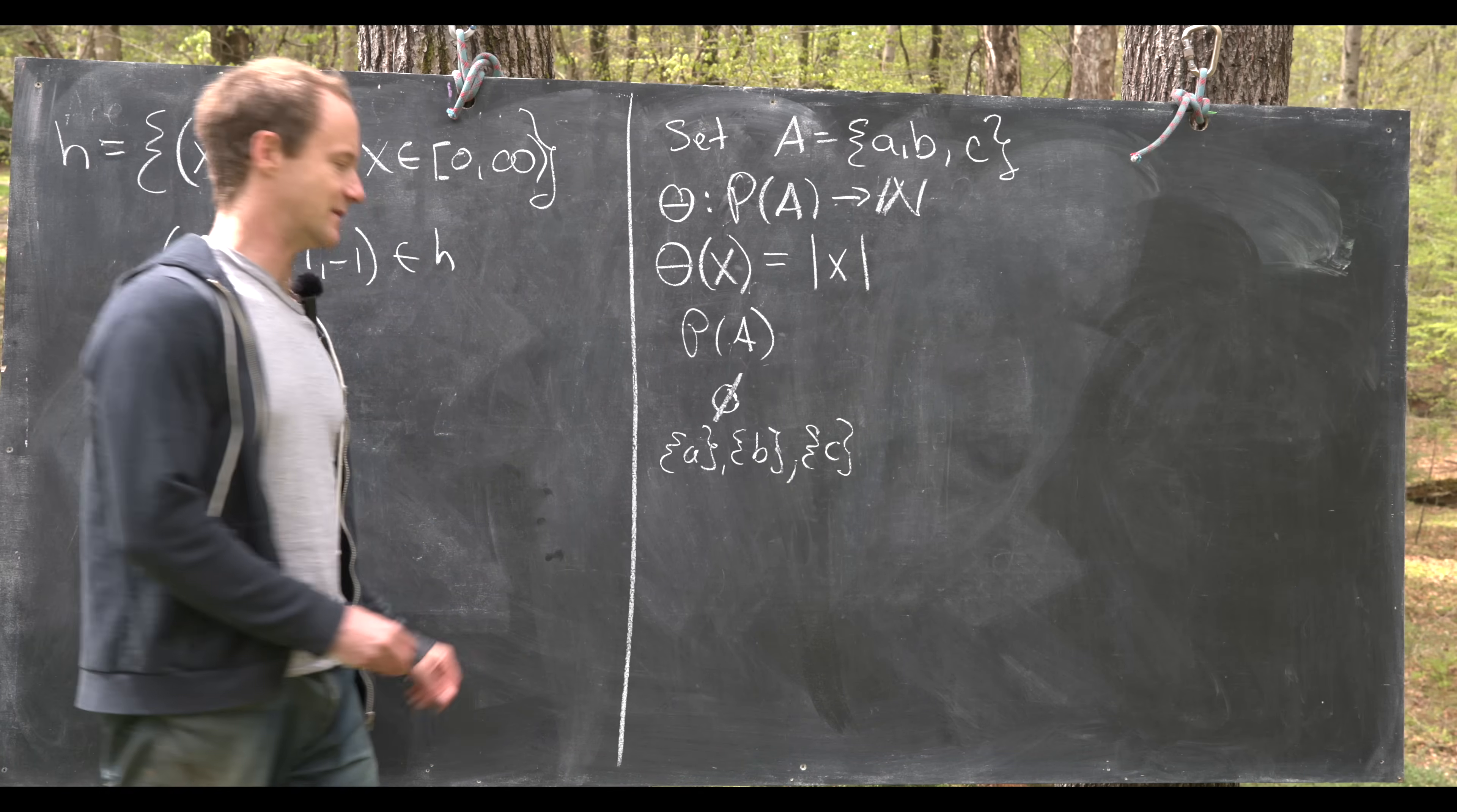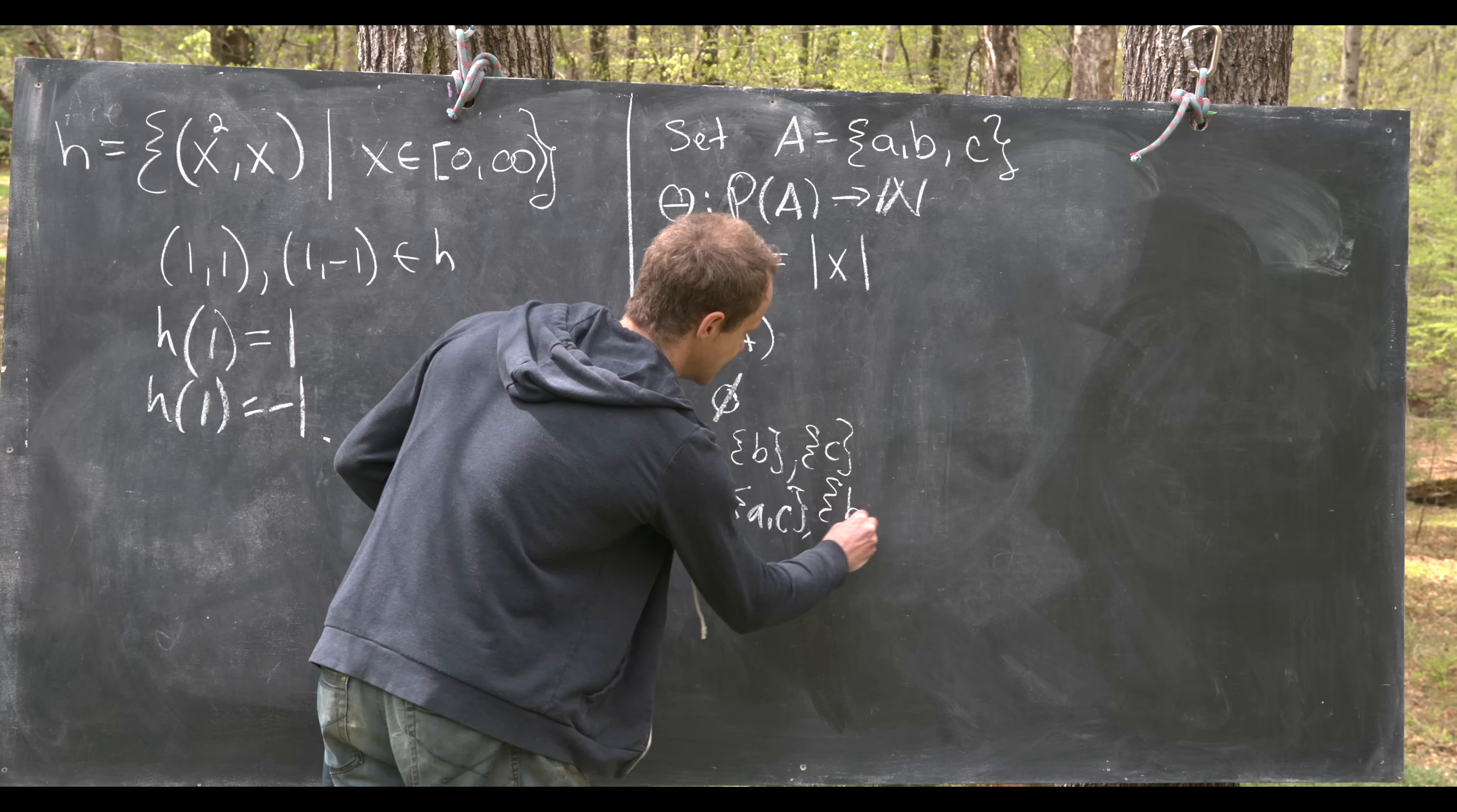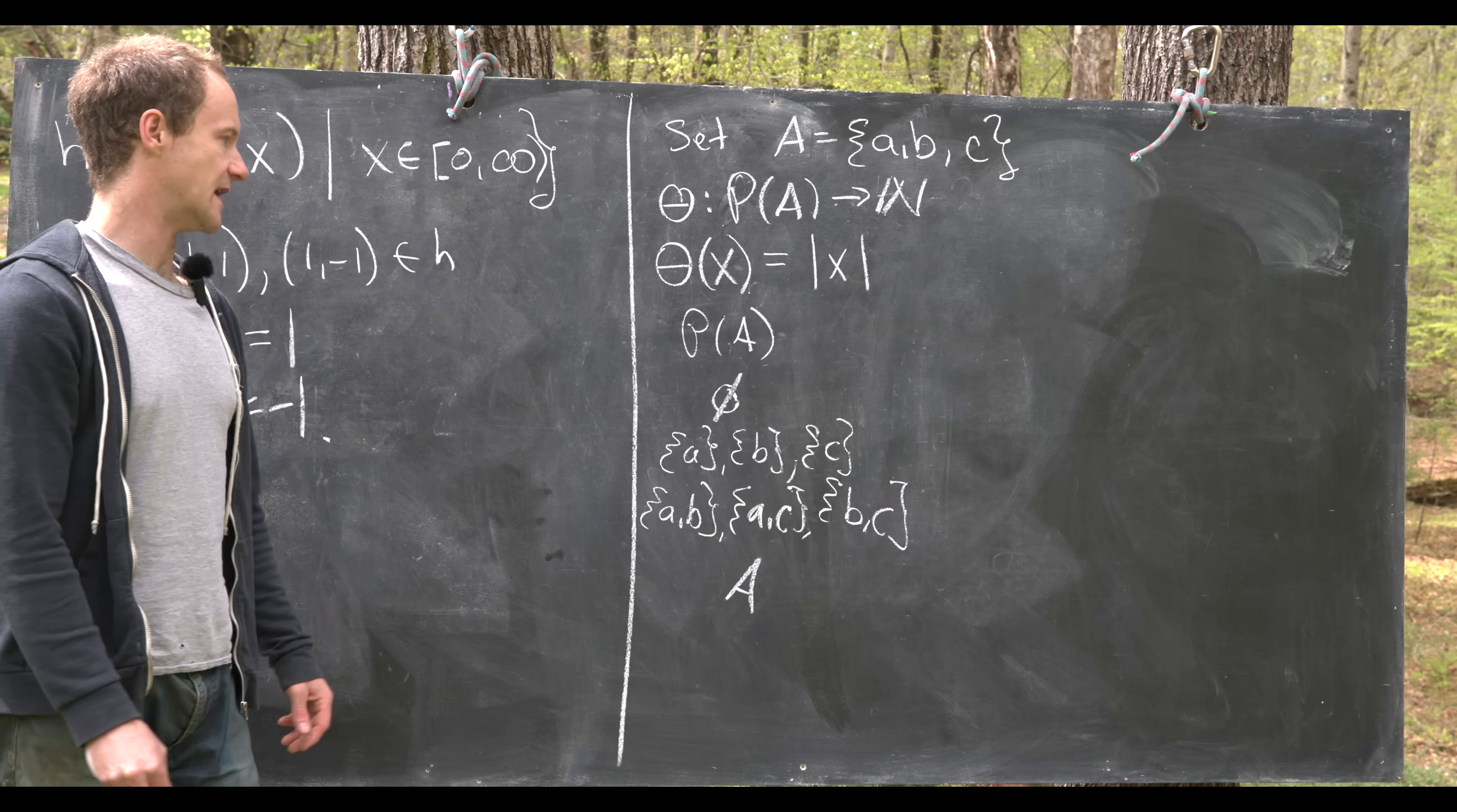And then we have three doubletons. In other words two element subsets. So that'll be like {a,b}, {a,c}, and then {b,c}. And then we have the last subset which would be the set itself A.